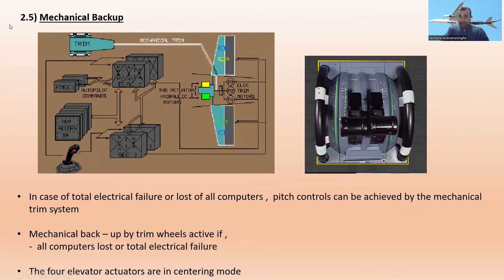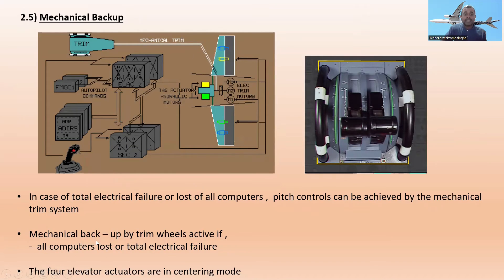2.5 — Mechanical backup. In case of total ELAC failure or loss of all computers, pitch control can be achieved by the mechanical trim system. The mechanical backup by trim is active if all computers are lost or there is total electrical failure. In this case, the four elevator actuators — two blue, one green, one yellow — are in centering mode.